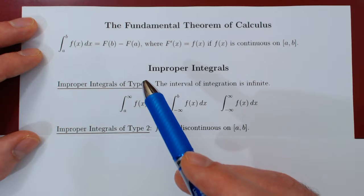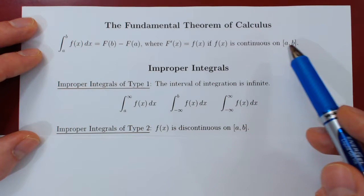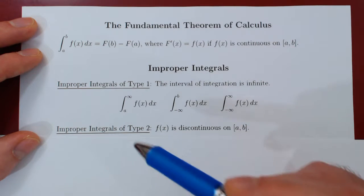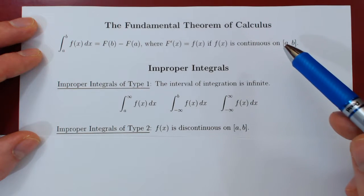So type one is where we assume f is still continuous on the range of integration, but where we allow either the upper bound of integration or the lower bound or both bounds of integration to be infinite.